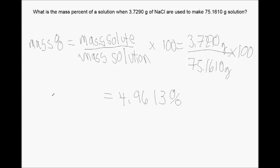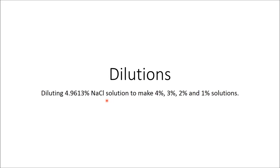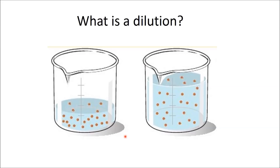Now we look at dilutions to make the other solutions for our calibration curve. Dilution is a quick and convenient way chemists take a more concentrated solution and make it less concentrated — we have the same amount of solute but a larger volume, making it more dilute. To perform a dilution, we add more solvent. In the case of salt water, we add more water. To determine the exact amount of water to add to the approximately 5% solution to make, say, a 4% NaCl solution, we use the dilution equation: C1V1 = C2V2, where C1 is the initial concentration, V1 is the initial volume, C2 is the final concentration, and V2 is the final volume.